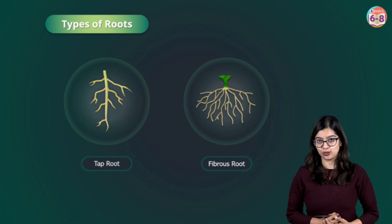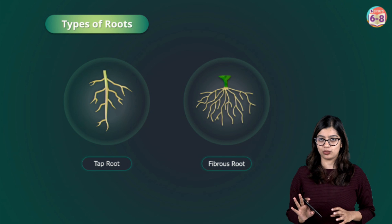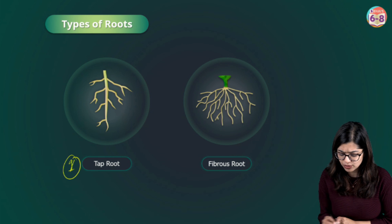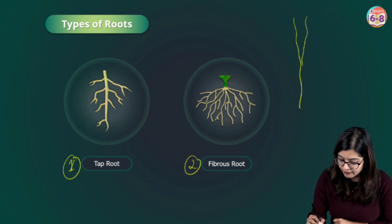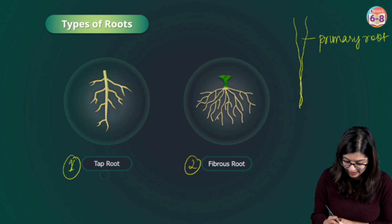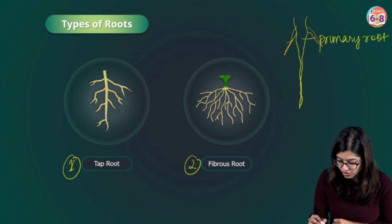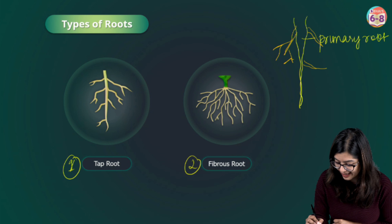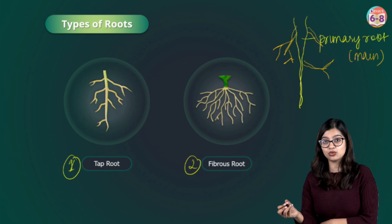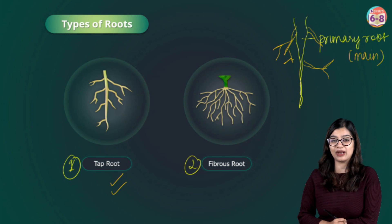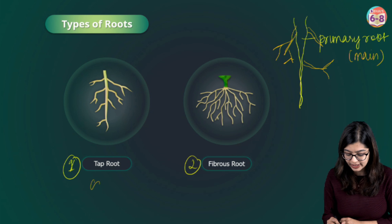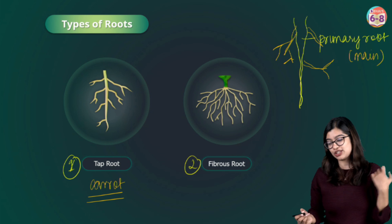Now let's move on to types of roots. Different plants have different types of roots and broadly we can categorize them into two: tap root and fibrous root. In the case of tap root, there is one main or primary root, and from the primary root there are branches that appear — secondary roots, tertiary roots, and so on. This kind of root system is called the tap root system. Plants like hibiscus and rose exhibit tap root system. Even carrots are modified tap roots.